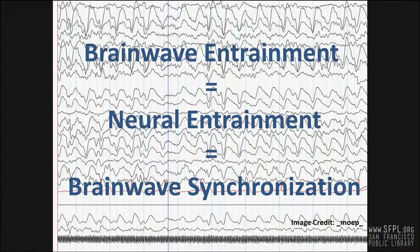Since these neurotransmitters are produced once a certain brainwave frequency range is reached, it is also desirable to affect what neurotransmitters are being produced by bringing a person into a specific brainwave frequency range. This process is known as brainwave entrainment, also known as neural entrainment or brainwave synchronization. Brainwave entrainment is any procedure that causes one's brainwave frequencies to synchronize with a periodic stimulus — which could be sound, vibration, or light — having a frequency corresponding to the intended brain state.